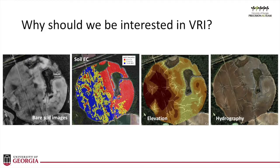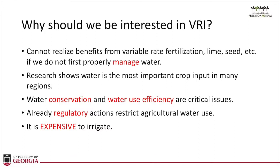To begin about variable rate irrigation, I'll use the acronym VRI. Why should we be interested in variable rate irrigation? There's a lot of variability in our fields — in soil type, elevation, and hydrography — so why should we be applying water uniformly? We've done precision ag research for a number of years at the University of Georgia and realized that, at least in the southeast, water is the main input that limits high crop yield. If we don't get the water right, all other variable rate actions like variable rate seed, lime, or fertilizer are not effective.